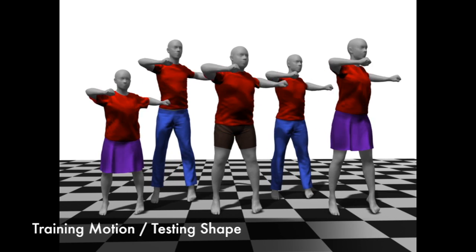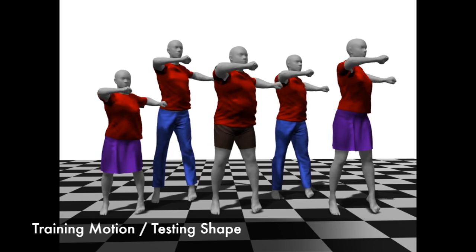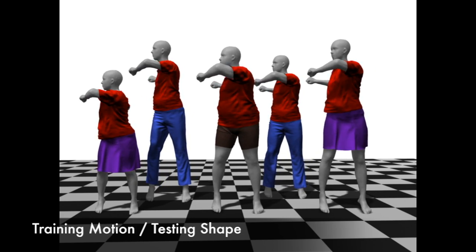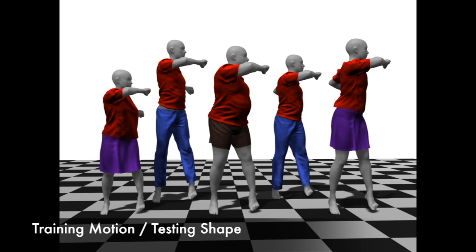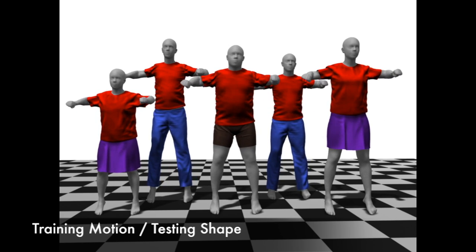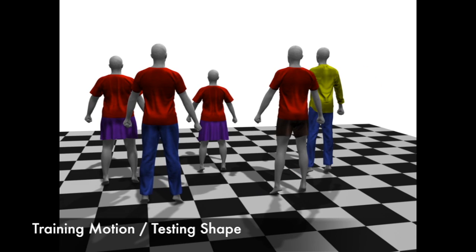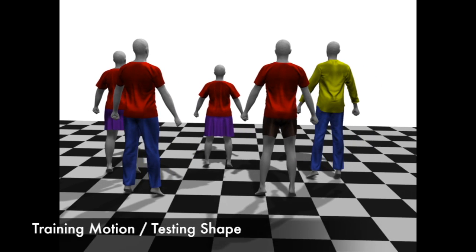We now show the drape animation for different body shapes and different motions. First, we show two motions that appear in the pose training set. Recall, however, that none of these body shapes were used in training the shape model.